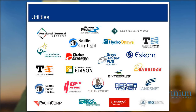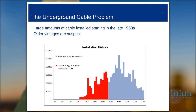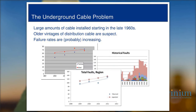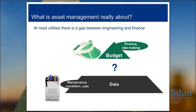We'll be discussing it specifically in the context of underground cable. This approach is well proven and has been applied very broadly. Let's start at the very beginning and frame up the problem that utilities with underground cable are facing. Large amounts of cable were installed starting in the late 1960s, and the older vintages, especially the older style XLPE cable, is suspect. Many utilities are seeing the rate of faults increase over time, with concern that this trend will affect reliability. The question is: what can be done about it?